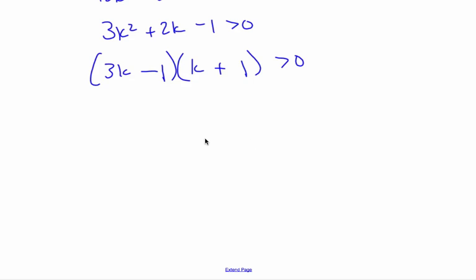So if I think about a number line, here's k. This will give me 1 third, so this is k equals 1 third. This is k equals negative 1. Negative 1, 1 third.